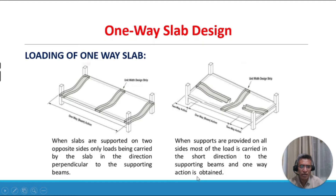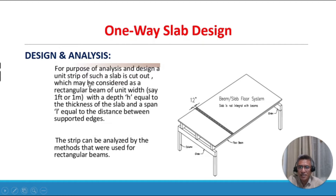For purposes of analysis and design, a unit strip of the slab is cut out, which may be considered as a rectangular beam of unit width — say one foot or one meter — with depth h equal to the thickness of the slab and span L equal to the distance between supported edges. The strip can be analyzed by the methods used for rectangular beams.